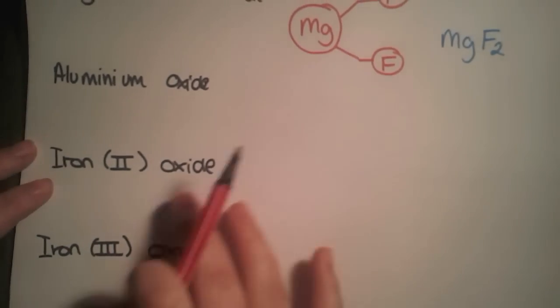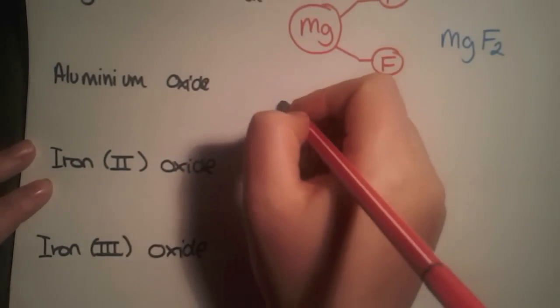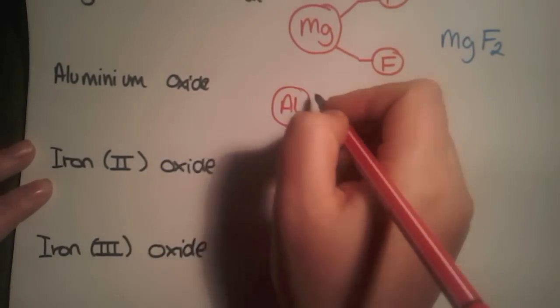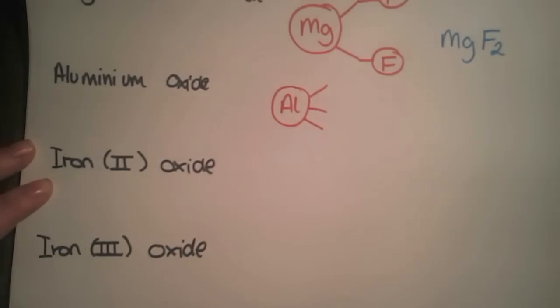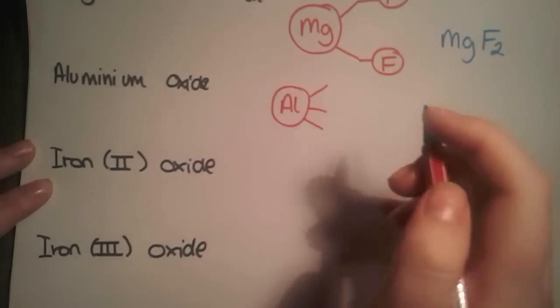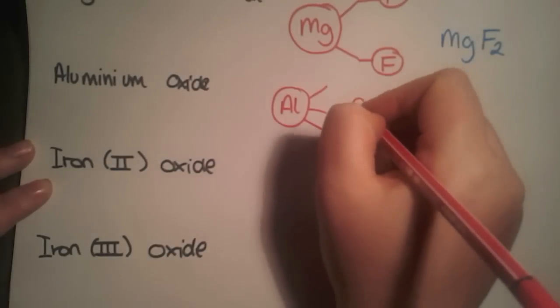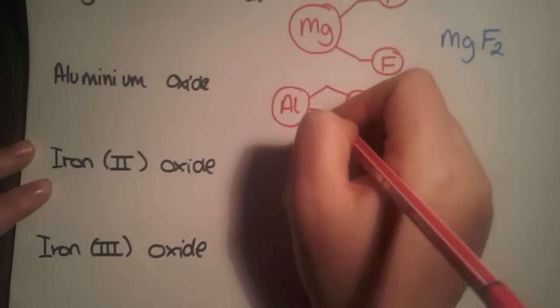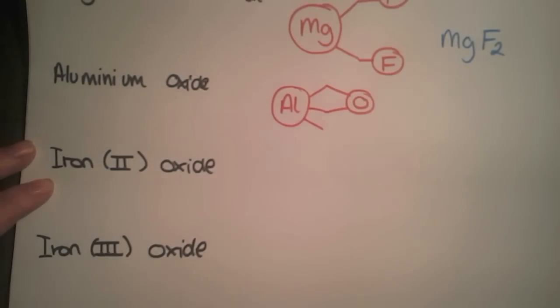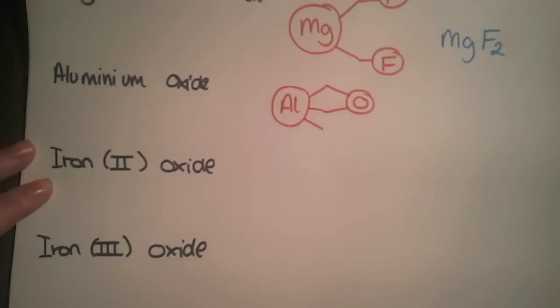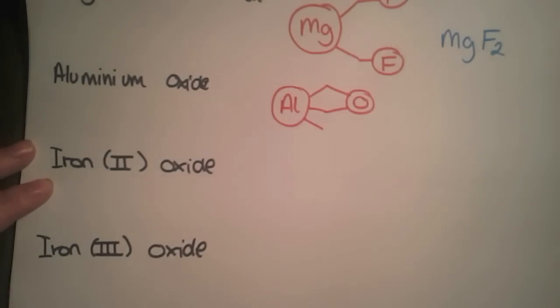The next example is slightly more tricky to draw. You have aluminum, which is in group three, so it has three available bonds. Oxygen is in group six, as we saw above, and has two arms. So both arms can join to that one aluminum. However, we've got this spare aluminum arm and the only thing we can join on is an oxygen.